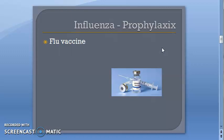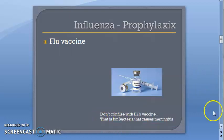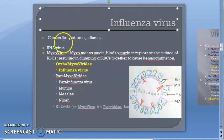Don't confuse the flu vaccine with the Hib vaccine. The Hib vaccine is for Haemophilus influenzae, which is a bacterium that does not cause influenza at all. Influenza is caused by a virus — the influenza virus. Haemophilus influenzae is a bacterium that was incorrectly named; it does not cause influenza. It causes meningitis.